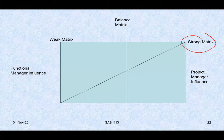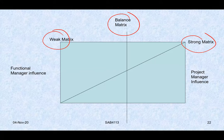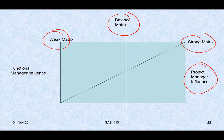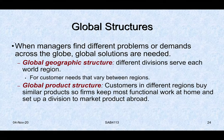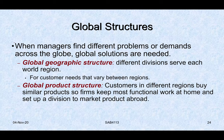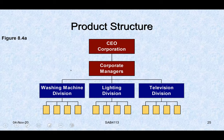From the matrix structure comes the terminology of strong matrix, weak matrix, and balanced matrix. A balanced matrix is what we ideally want. When the project manager has more influence, it's called a strong matrix. When the functional manager is more dominant, it's called a weak matrix. Sometimes organizational structures are also designed geographically or by product — for example, a global organization like Samsung or Panasonic may divide by product divisions: washing machines, lighting, televisions, smartphones.